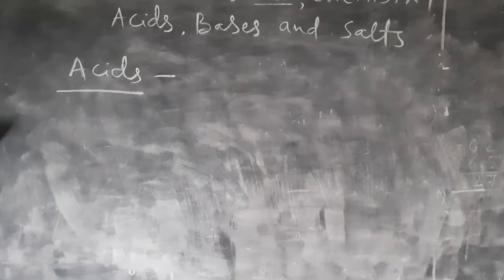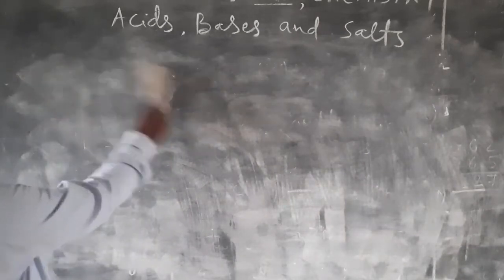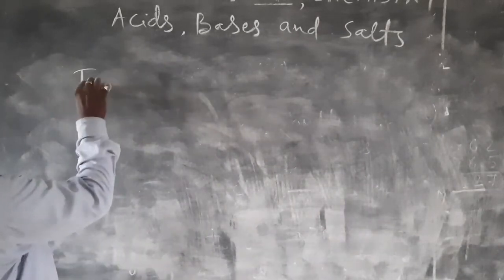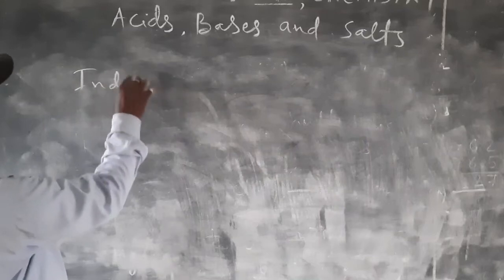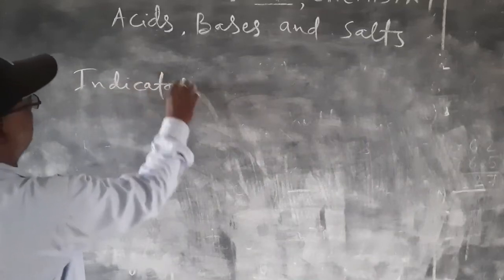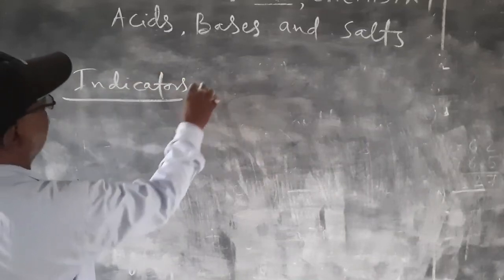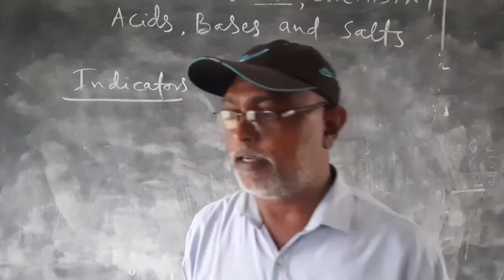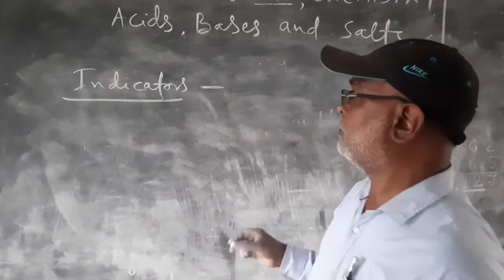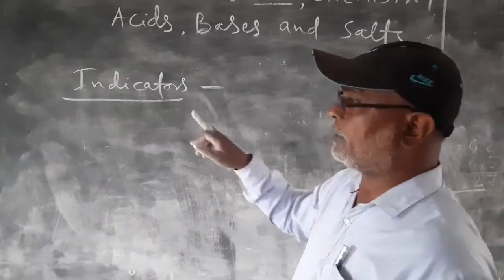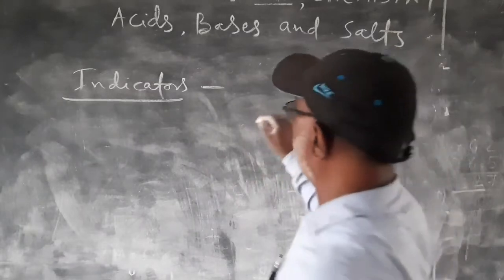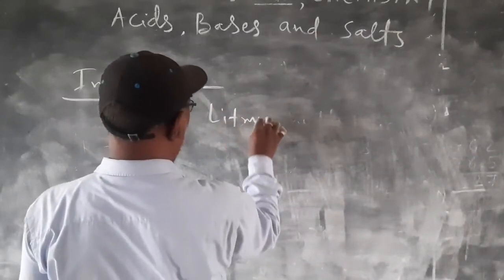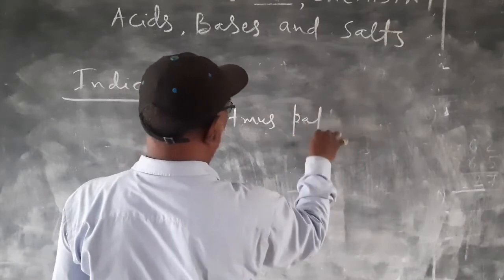Now about indicators. Indicators are substances which change their color in acidic or basic medium. That is, like litmus paper - it has litmus solution and litmus paper.